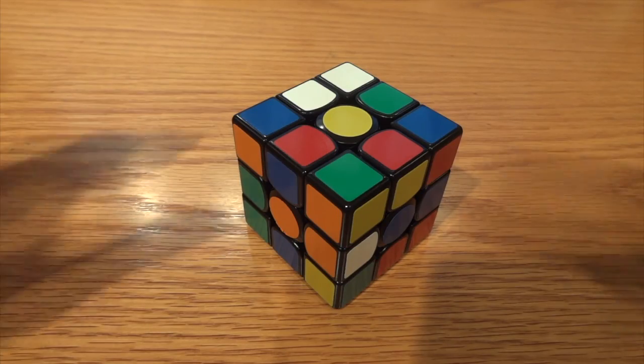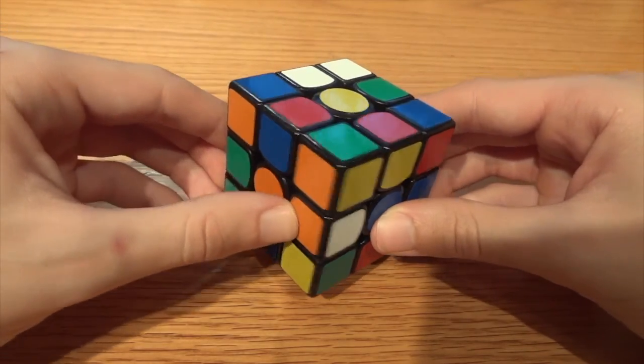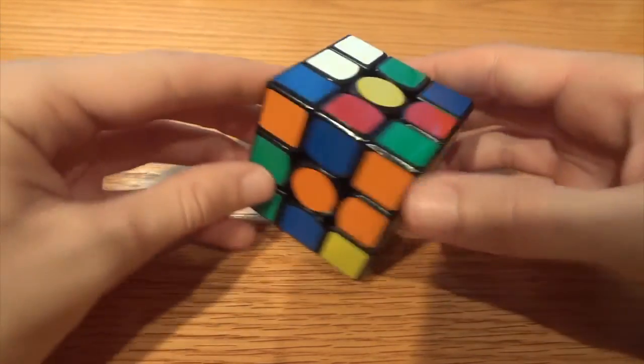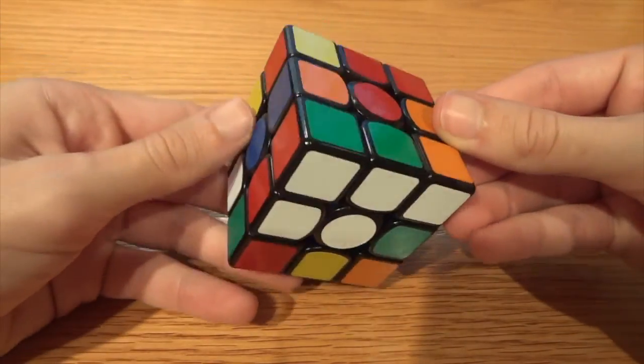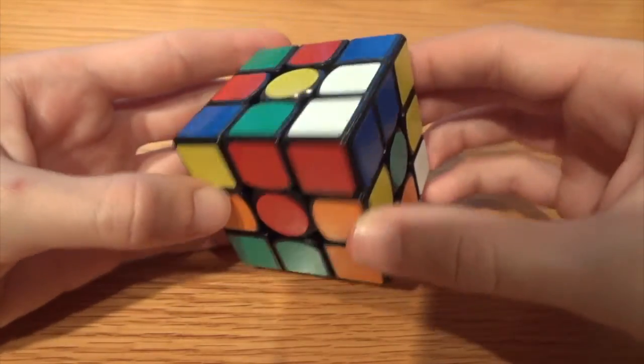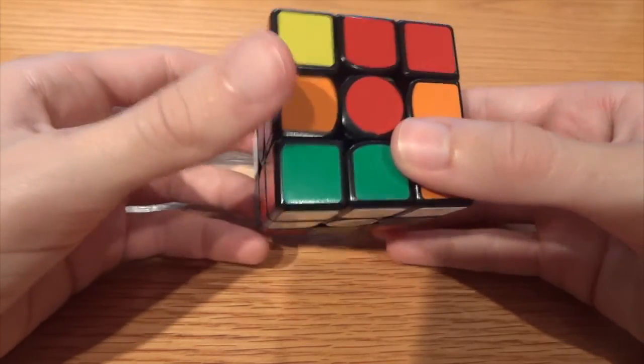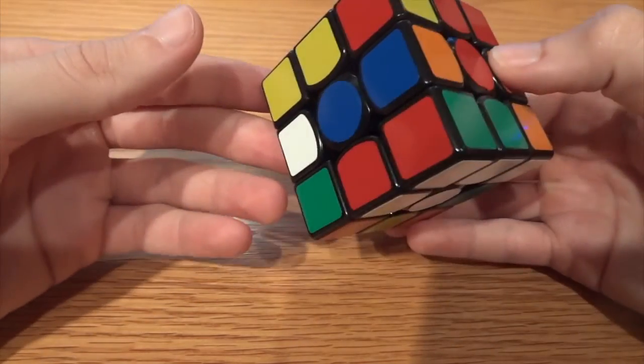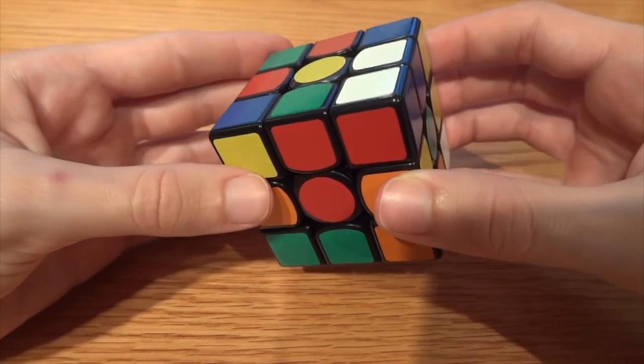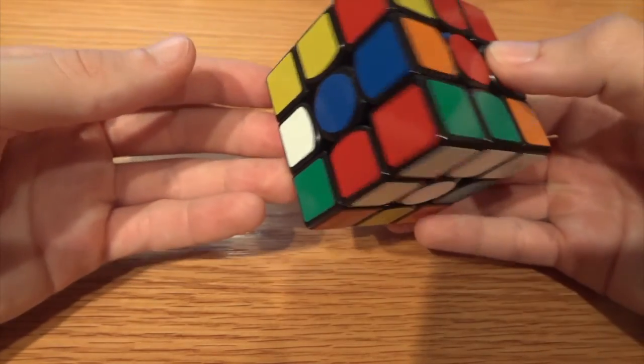For this solve I see that my orange edge is set, my blue edge is oriented but not set, and my green and red edges are set with a corner in between. So I can almost solve this like in a Petrus fashion. This is going to work out really well.